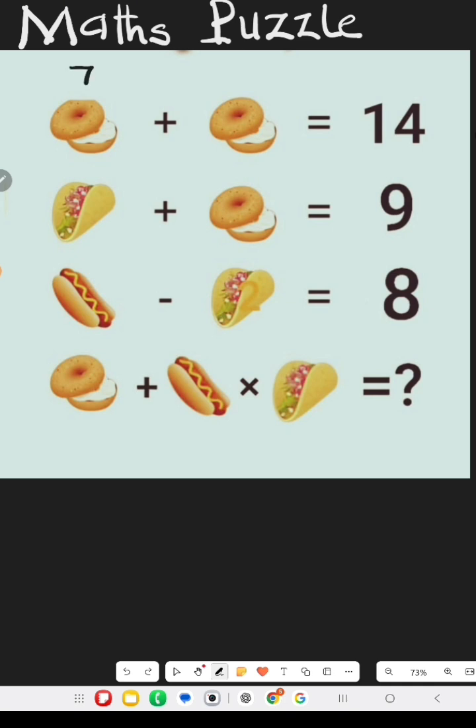Meaning this is 7 plus 7 equals 14. We have wrap plus donut equals 9. We have this to be 7 and this to be 2, so 2 plus 7 equals 9.